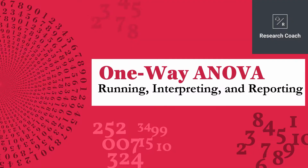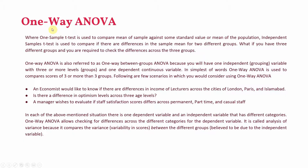In this session we are going to look into one-way ANOVA using SPSS — how to run, interpret, and report one-way ANOVA. We have had different types of differential tests where one-sample t-test was used to compare the mean of a sample to a standard value, and independent sample t-test was used to compare two groups. If we have more than two groups, we use one-way ANOVA.